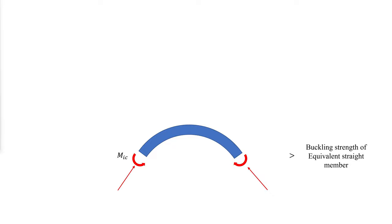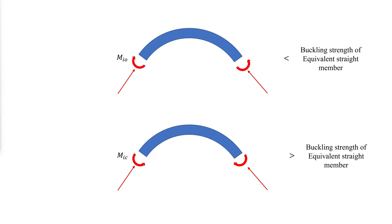Flexure in the plane of curvature can cause member instability, with a buckled shape characterized by out-of-plane translation and twisting. For closing moments MIC, which are moments that induce compression at the inner flange, the buckling strength is greater than that of an equivalent straight member. For members with opening moments MIO, which are moments that induce compression at the outer flange, the buckling strength is less than that of an equivalent straight member.